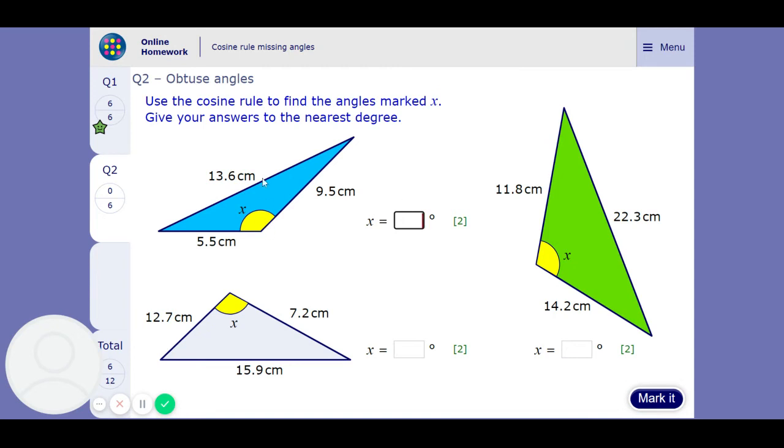Because these are obtuse, because these are bigger than 90, we need to make sure that our answers are bigger than 90. If our calculator tells us something which is not bigger than 90 we can adjust it, look at a cos graph and figure out what the actual missing angle should be. So let's stick the numbers in the formula and see what we get and see if it seems sensible. So you should always check if your answer seems sensible before you press mark it or before you hand in a homework or a paper.